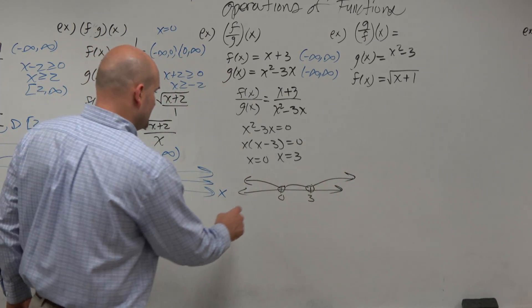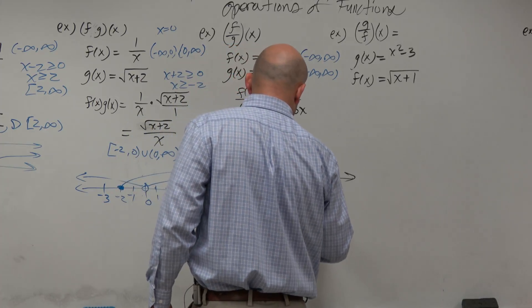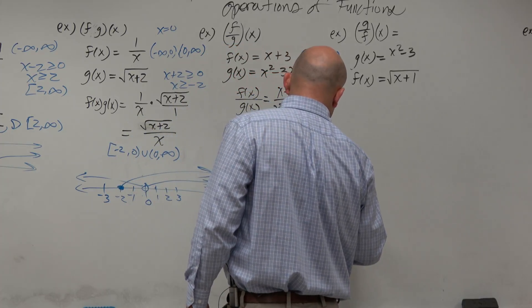So my domain is from negative infinity to 0, union 0 to 3, union 3 to infinity.